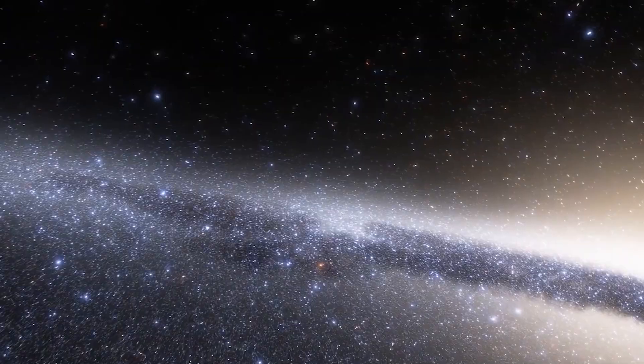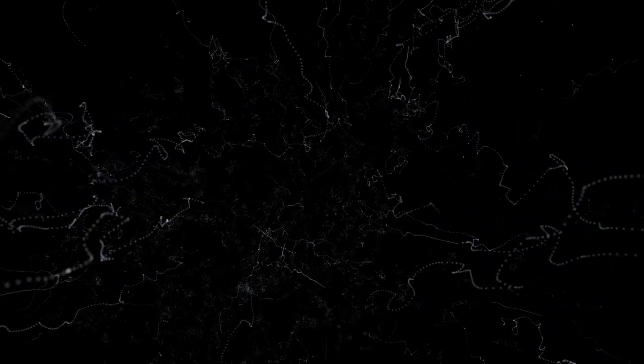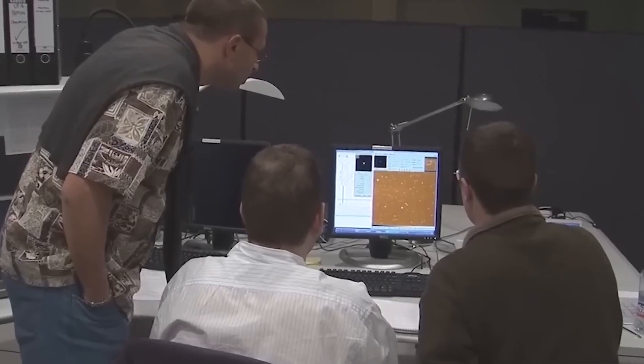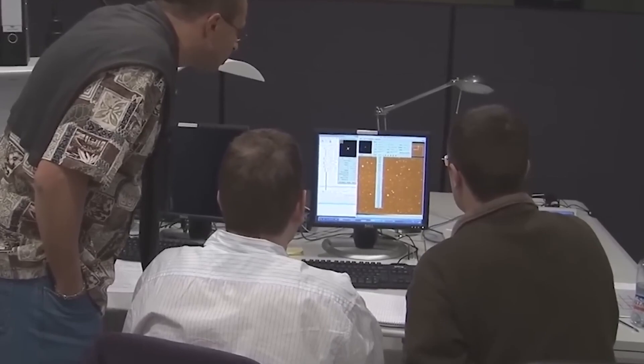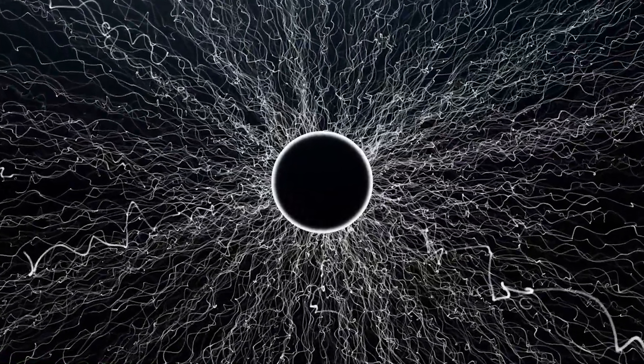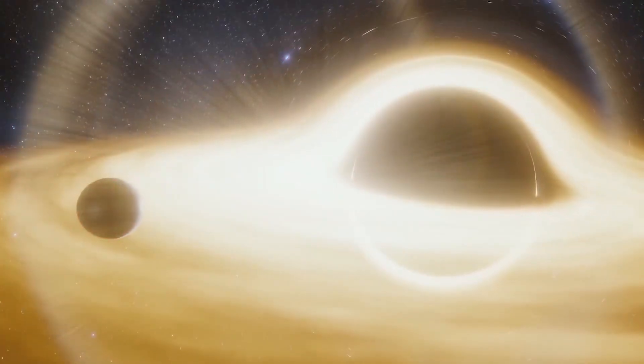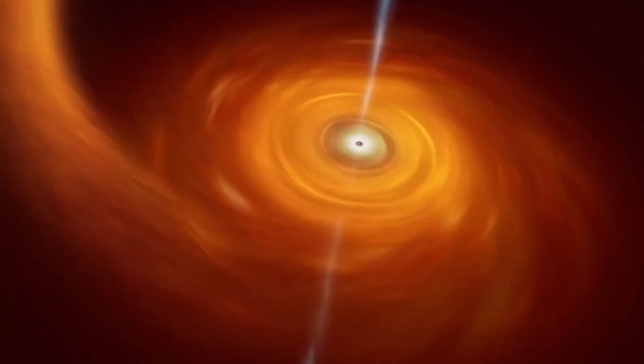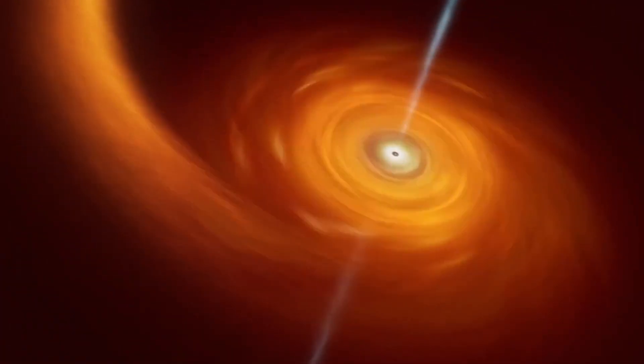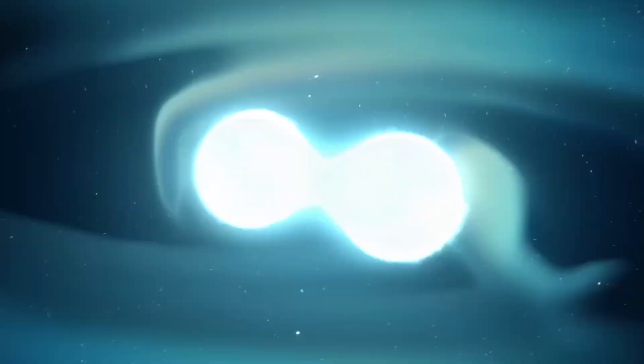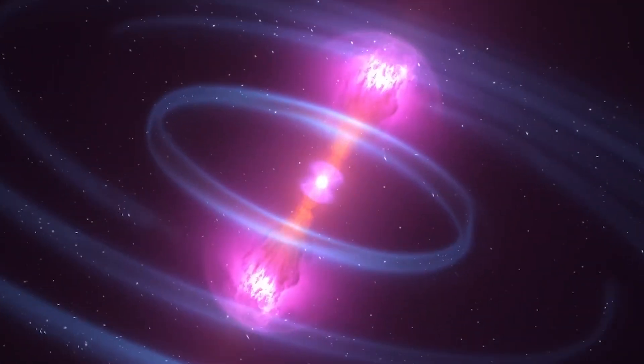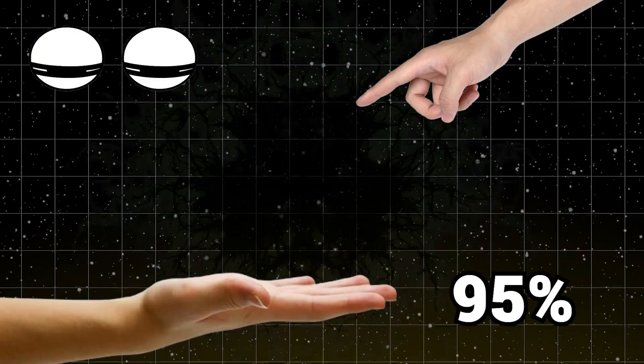When we look deeper into the universe, we find dark matter and dark energy, two forces that even the smartest scientists don't fully understand. These unseen but omnipresent beings weave the fabric of the universe and control how it grows and is put together. Black holes' gravity bends light and eats stars, but dark matter and dark energy work on a completely different level. They make up more than 95 percent of the universe, but are hard to see or touch.